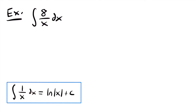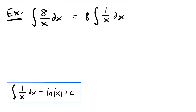The log rule says that the integral of 1 divided by x dx is equal to the natural log of the absolute value of x plus c. In this case, if we start by pulling 8 out to the front of the integral, we'll have that this is equal to 8 times the integral of 1 divided by x dx. Using this rule, the integral of 1 divided by x is equal to the natural log of the absolute value of x, so this will be equal to 8 times the natural log of the absolute value of x plus c.